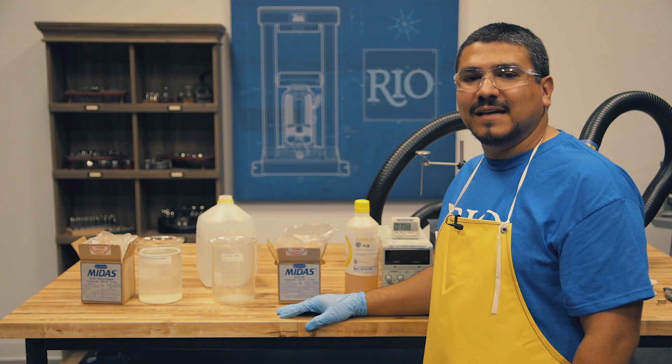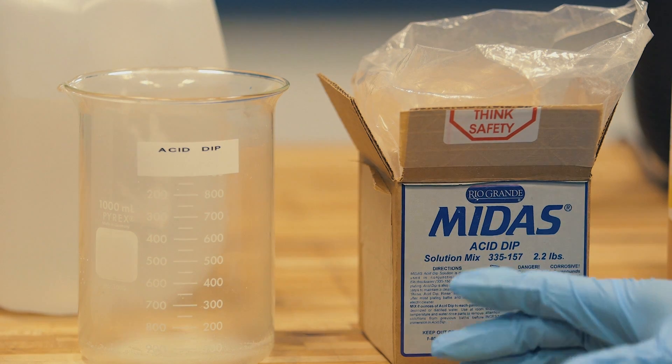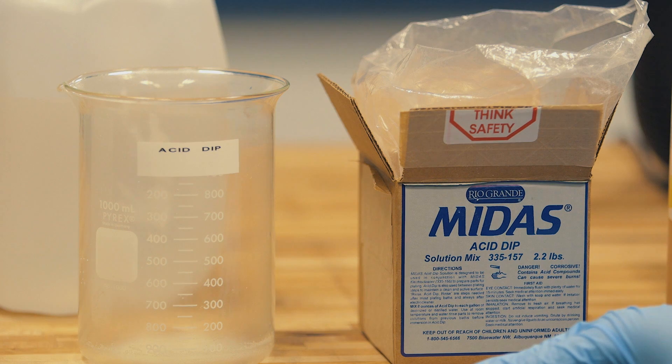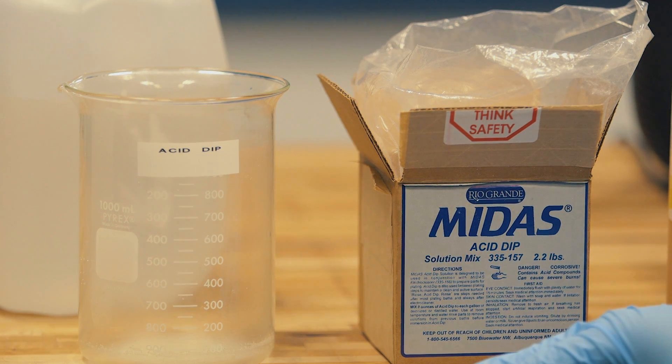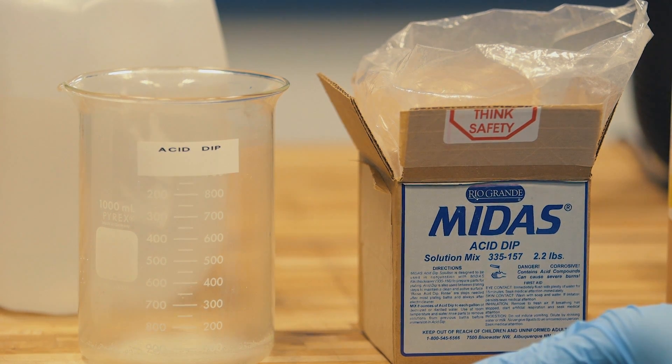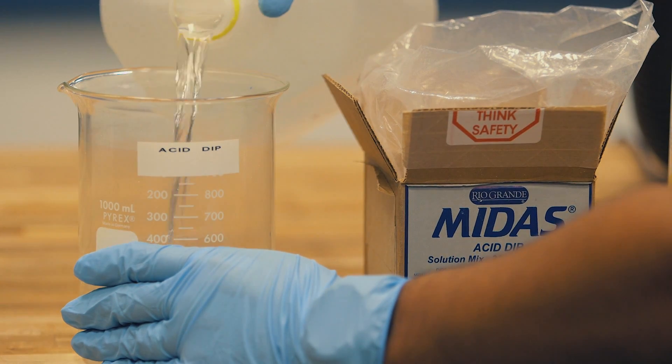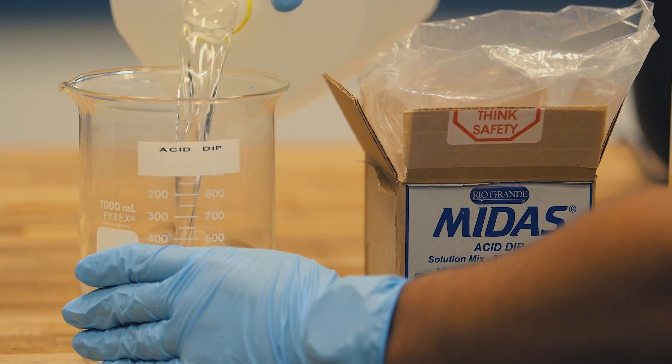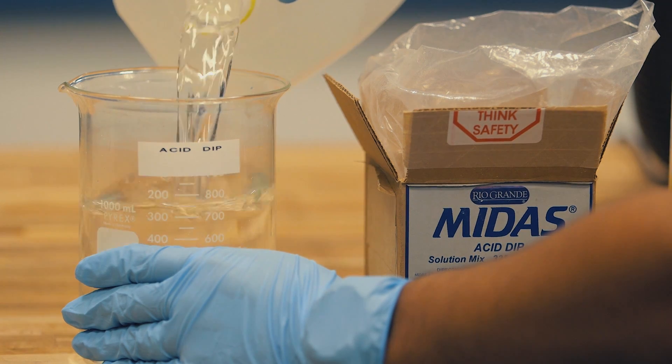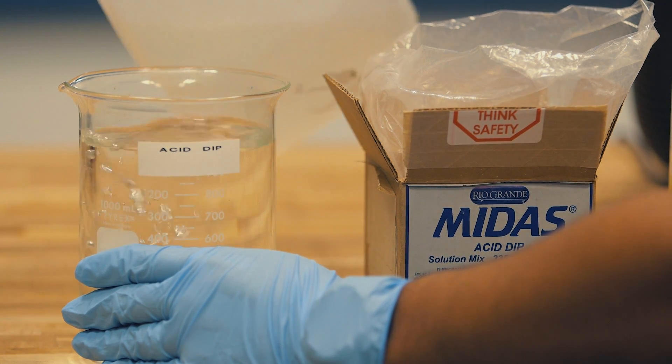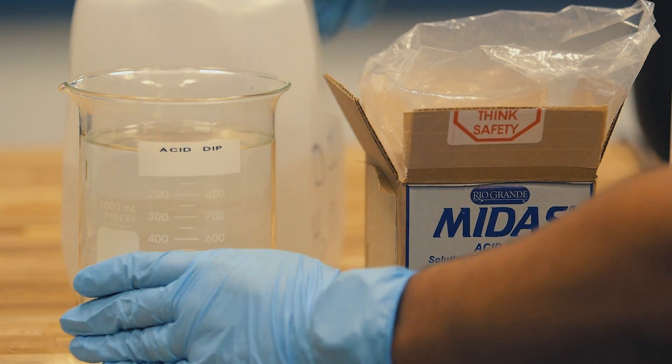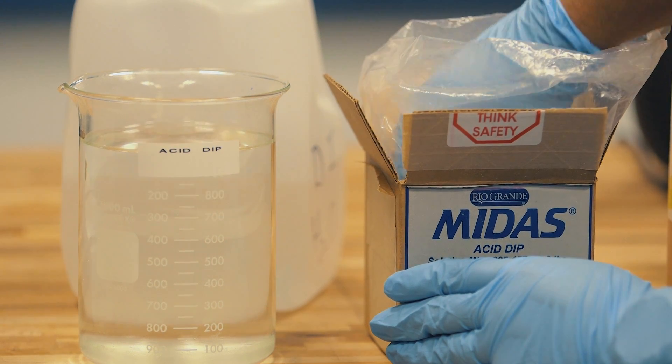Second cleaning solution is our acid dip neutralizer. Follow recommended instructions on this also. For today's demonstration, we're going to mix two tablespoons of acid dip for one liter of distilled water. I have my acid dip pre-measured.